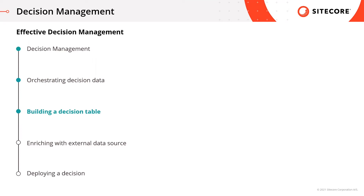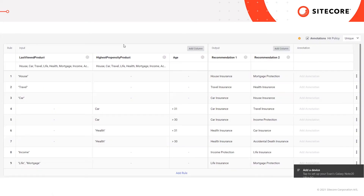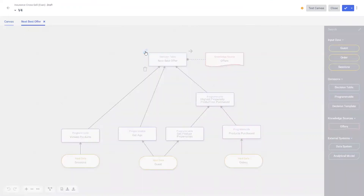Now that we've orchestrated the information on a decision canvas, we can start setting up our rules. In this section, we'll be taking a closer look at a decision table to see exactly how this is done. You'll see how we can execute rules one line at a time, adding input and output columns, and how we can set up a hit policy to describe how these items will be evaluated. Now that the business and technical users have orchestrated the data, we can start setting up individual rules to offer appropriate insurance products to our customers. Let's click on the table and see what has been set up.